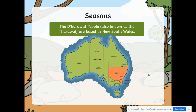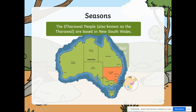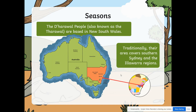The Dharawal people, also known as the Tharawal, are based in New South Wales. Here you can see our map of Australia — we have Queensland, the Northern Territory, Western Australia, South Australia, Victoria, Tasmania, and here is New South Wales. Traditionally, the Dharawal people's area covers southern Sydney and the Illawarra regions, and we live in the Illawarra region.